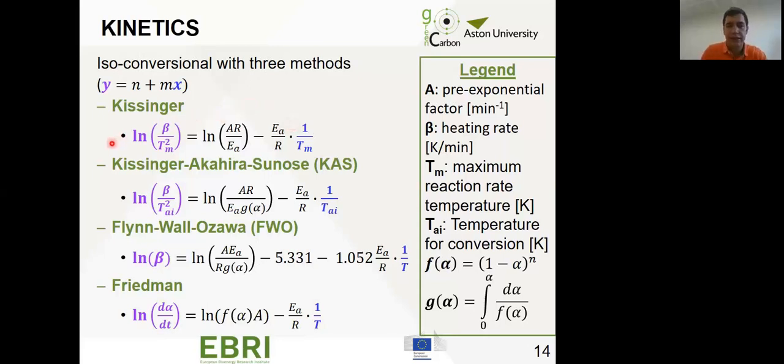Then we've got the Kissinger-Akahira-Sunose method, the KAS, which accounts for the heating rate and the temperature at which the conversion changes. You establish values, normally 0.1, 0.2 up to 0.9, then you see the temperature at which that conversion gets into one of those values. We obtain different temperatures for conversions 0.1 up to 0.9, then represent them graphically depending on heating rate. For each conversion value, you use the three heating rates.